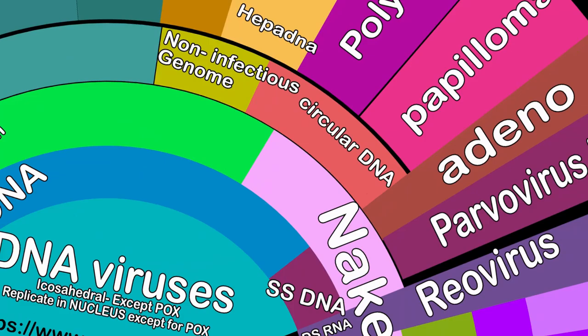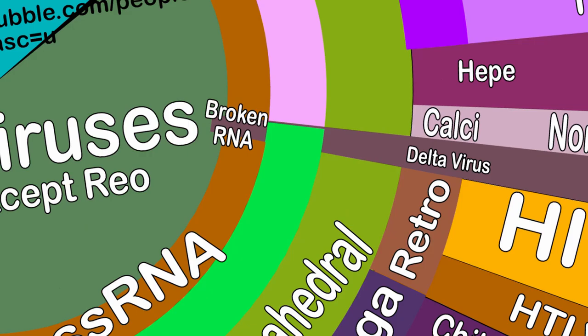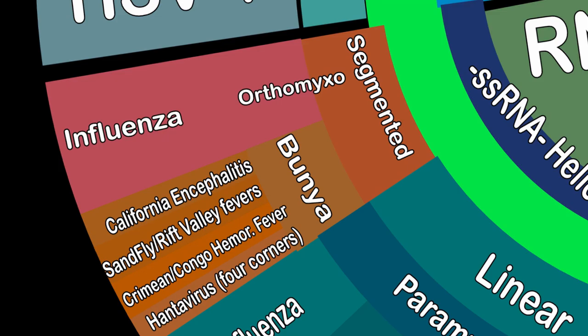Parvovirus B19 is a weird one — it causes 5th disease. Blazing along to RNA viruses.